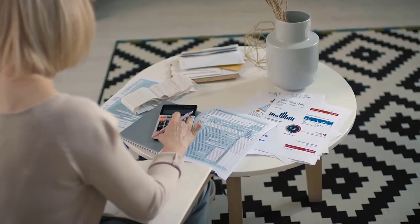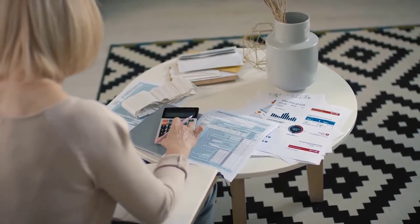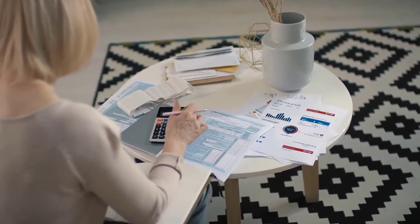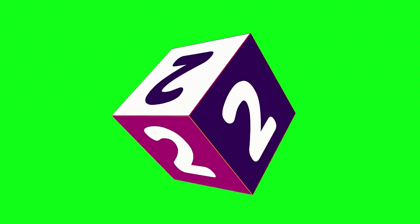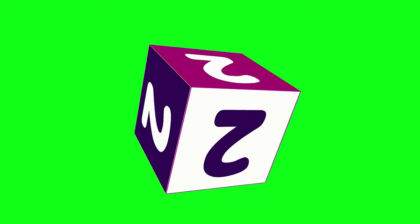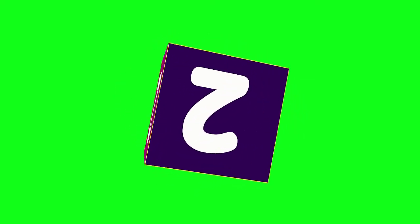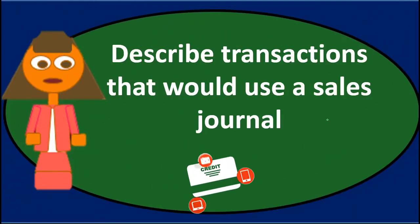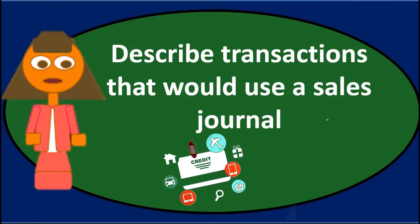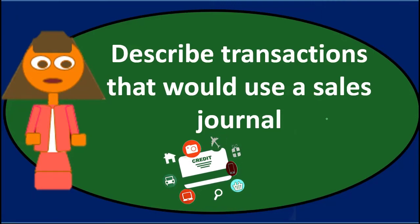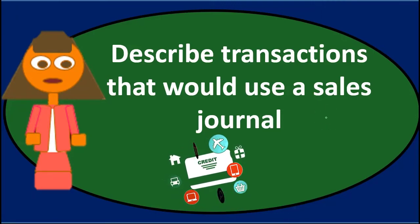The sales journal really represents accounts receivable — meaning sales on account that increase the receivable account. A sale made on account goes in the sales journal. It is one of the most specific types of journals, and therefore one of the easiest to track, because we can have essentially one column representing both a credit to sales and a debit to accounts receivable.